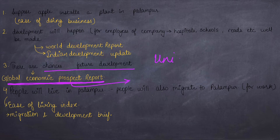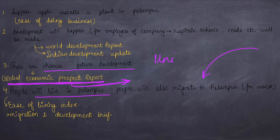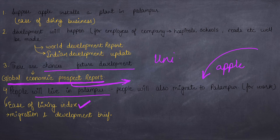Since schools have been built, there are chances that universities may also come in the future. Therefore, the World Bank also publishes the Global Economic Prospects report — 'prospect' means any probability or possibility of future development. This report tells us how much development can happen in the world's economies in the future. Also, since people will live in Palampur, ease of living — such as housing conditions — matters. For example, in California, despite being famous for IT, housing is so expensive that people have to live in their cars. So the Ease of Living Index is also published by the World Bank.